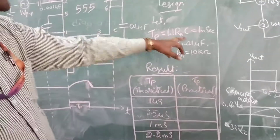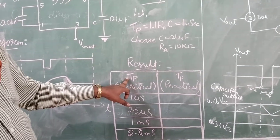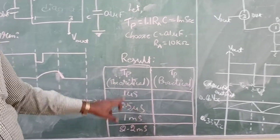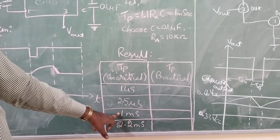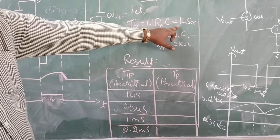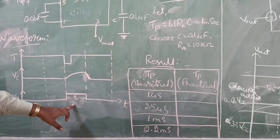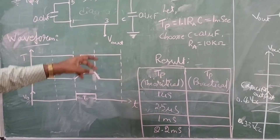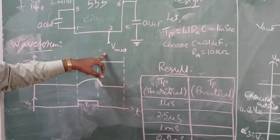Here is one example we have taken: 1 millisecond. You can see the tabular column — this is the output pulse width, this is the theoretical value, and this is the practical value. In this particular experiment, we have taken 1 millisecond theoretically. Finally, at the output of pin number 3, you have to get 1 millisecond — whatever the design value theoretically calculated. Now that one we have to practically get at the output of the 555 timer, that is pin number 3.